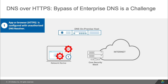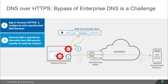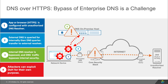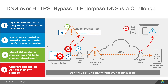With DOH, users have an app or a browser that is configured with some external unauthorized DNS resolver. The unauthorized resolver is searched for using an internal DNS, then all future DNS traffic is queried by the external DNS. This causes the trusted internal DNS to not be used and opens up your internal security stack to be bypassed, making it easy for hackers to take advantage of your system.